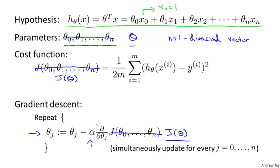Let's see what this looks like when we implement gradient descent, and in particular, let's see what that partial derivative term looks like.